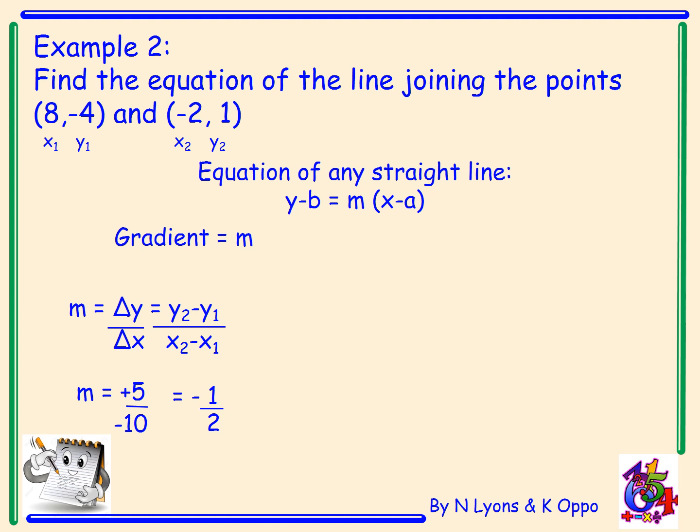Now I know the gradient. I can select a point on the line. Any point I like. I can try (8, -4) or (-2, 1). It's up to you. For this example, I've gone to the point (-2, 1). I write out the equation y minus b equals m(x minus a) and substitute for m, a, and b. That gives me y minus one equals negative a half(x minus minus two).